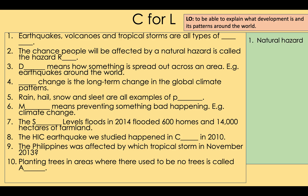Okay, the answers — take a green pen. Number one: earthquakes, volcanoes, and tropical storms are all types of natural hazard. Number two: the chance of people being affected by a natural hazard is called hazard risk. Number three: distribution means how something is spread out across an area — for example, most earthquakes are distributed along the plate boundaries of the world.